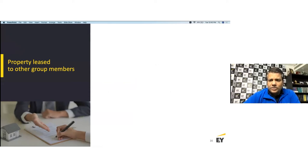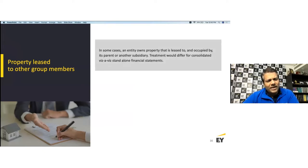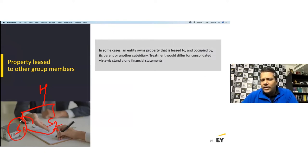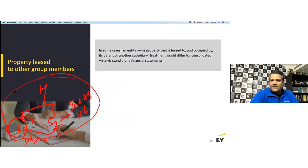For property leased to other group members, you can get different accounting answers in standalone versus consolidated financial statements. For example, if S1 has leased a property to S2: in S1's standalone statements it is investment property under Ind AS 40; in S2's standalone statements they account for it under Ind AS 116. However, in the consolidated financial statements, the transaction is nullified and it is accounted for under Ind AS 16.